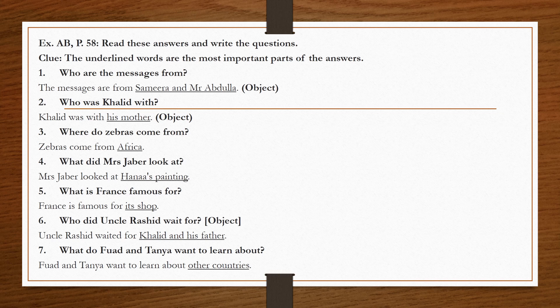Number seven: 'Fouad and Tanya want to learn about other countries.' 'Other countries' is underlined — it's a thing, not a place, so we use 'what.' No auxiliary exists and the verb is present tense with plural subject, so we use 'do.' Result: 'What do Fouad and Tanya want to learn about?'